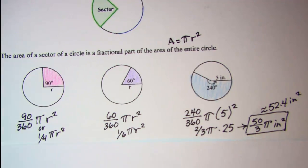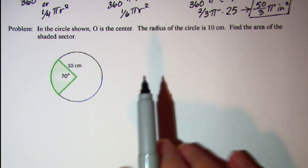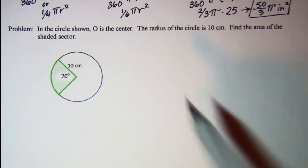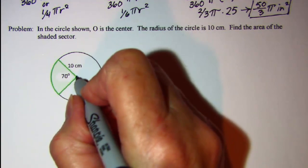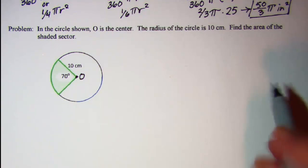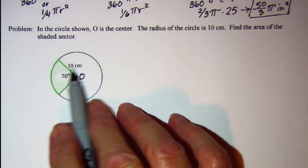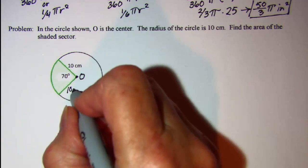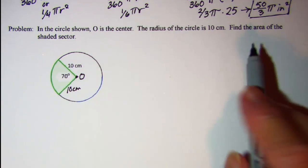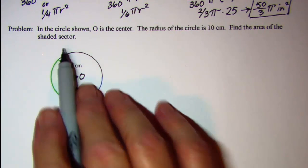So let's do another problem. In the circle shown O is the center, the radius of the circle is 10 centimeters, so up here is 10 and this one also is 10. Find the area of the shaded sector.